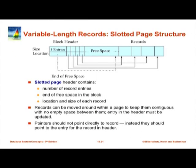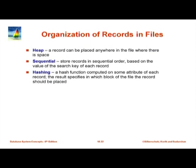Getting back to the slides — we saw the slotted page structure, which lets us store variable-length records in a page. How do you decide which record goes where in a file? In a heap organization, a record can be placed anywhere in the file where there is free space. Commonly, records are added sequentially at the end of the file, and once placed, they stay there forever.